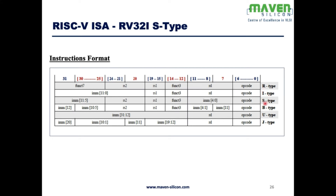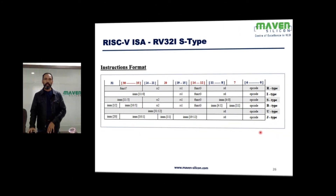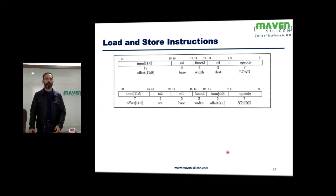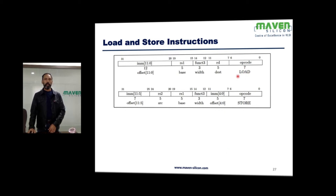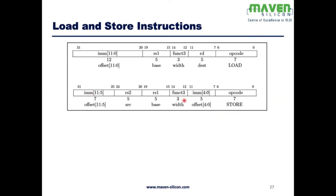We have seen R-type and I-type, now let's look at S-type. We use S-type primarily to store the value into memory. The value is defined by rs2, and the address will be calculated from both rs1 and the immediate value. The operation is defined by funct3. Both load and store demand the immediate value bits 11 down to 0 — 12 bits. In S-type, the same immediate value is actually placed at different locations — that's the main difference.